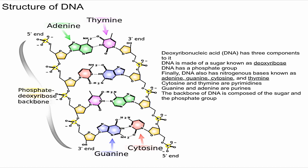It's also useful to briefly go over the structure of the nitrogenous bases. Adenine in green looks relatively similar to guanine in purple — they both have two rings. As a result, we categorize guanine and adenine as purines.